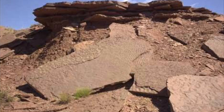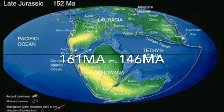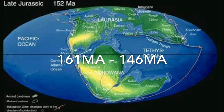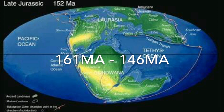Last is the Upper Jurassic, also called Malm, ranging from 161 to 146 million years ago. These indicate the Late Jurassic Age.